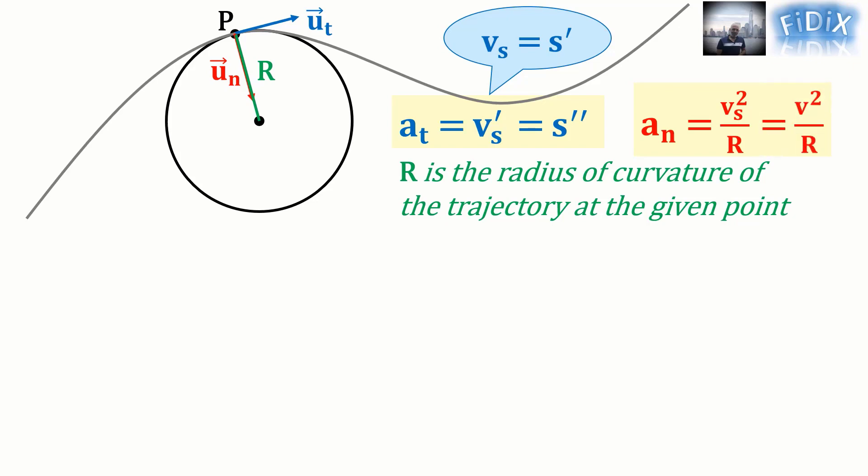Note that the algebraic value v_s squared can be replaced by the magnitude v squared, since any squared number is positive.